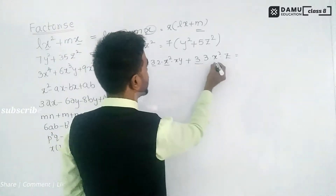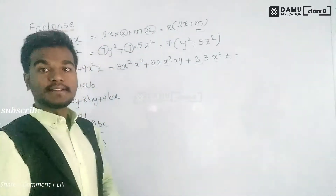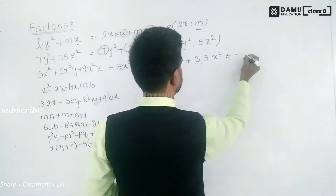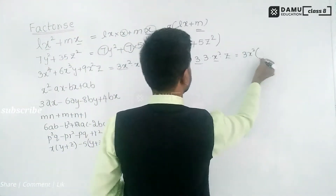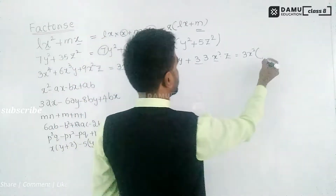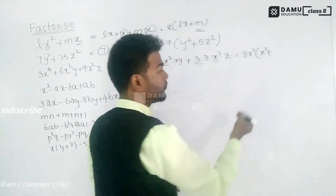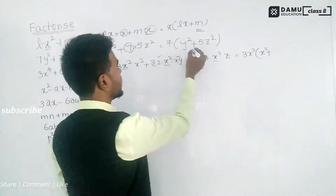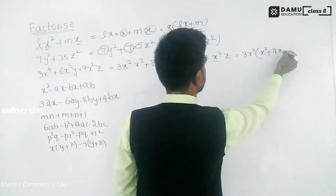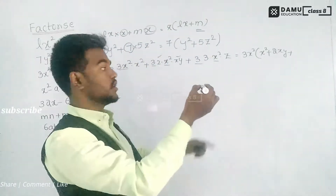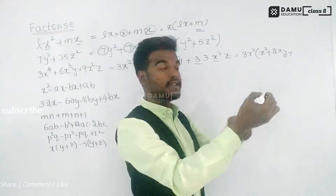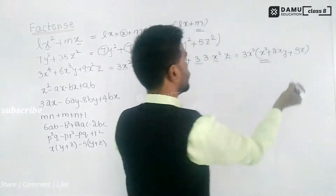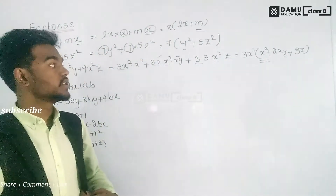Taking 3x² outside from all terms: from 3x⁴ we get x², from 6x³y (which is 3×2×x²×x×y) we get 2xy, and from 9x²z we get 3z. So the factorized form is 3x²(x² + 2xy + 3z).